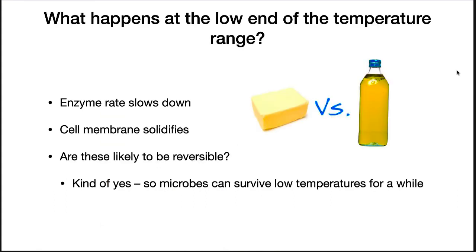What do you think happens at the low end of the temperature range? A microbe cannot grow below its low temperature limit because things slow down too much or completely freeze. The rate of enzymatic reactions becomes so slow that an organism is no longer able to carry out the reactions necessary for life. If the temperature gets too low, cell membranes will basically freeze solid — think butter versus oil. Are these limitations reversible? In a lot of cases, yes. Microbes can survive freezing for a while and will start back up when it gets warmer.